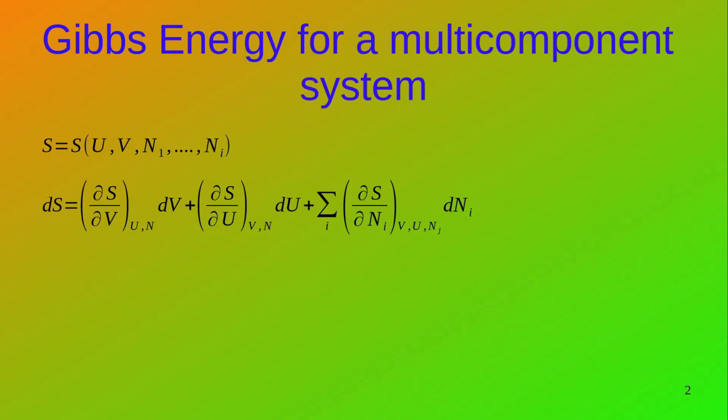We can say that the entropy is a function of the internal energy, the volume, and the moles of each and every component in the system. So the change in entropy of such a system has three terms: change in entropy with respect to volume, change in entropy with respect to internal energy, and summation over all the components of the change in entropy with respect to change in a particular component.